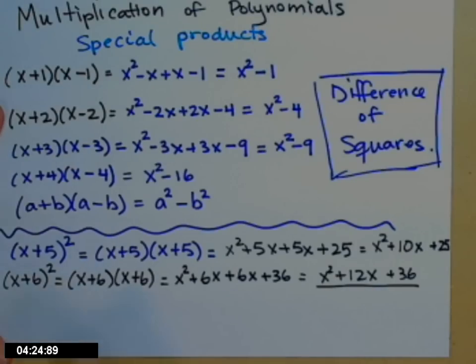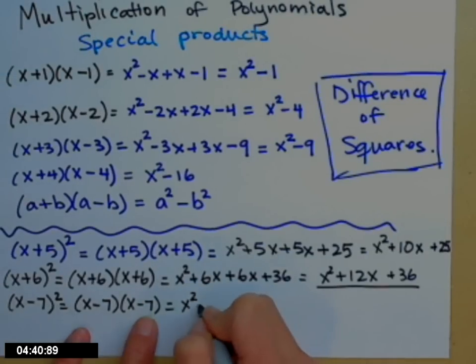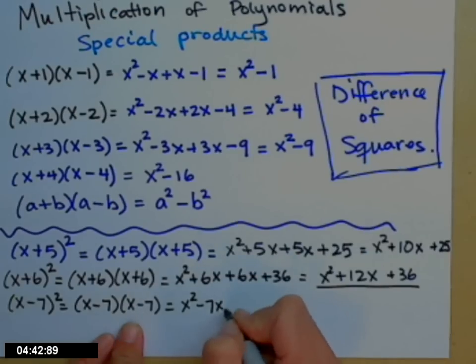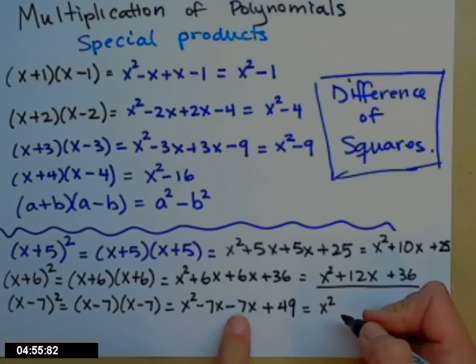I can hear the question out there. What if it's a minus? Okay, well let's take a look. What if I have x minus 7 quantity squared? So again, x squared minus 7x minus 7 more x's. Now I have a negative 7 times a negative 7. Remember that's positive. 49. Go ahead and tidy. x squared negative 7x minus 7 more x's minus 14x and plus 49.